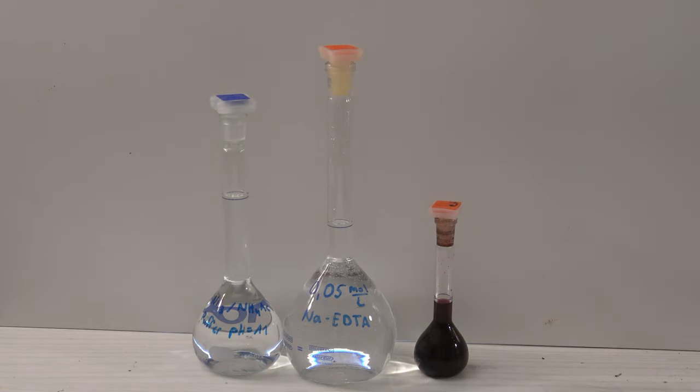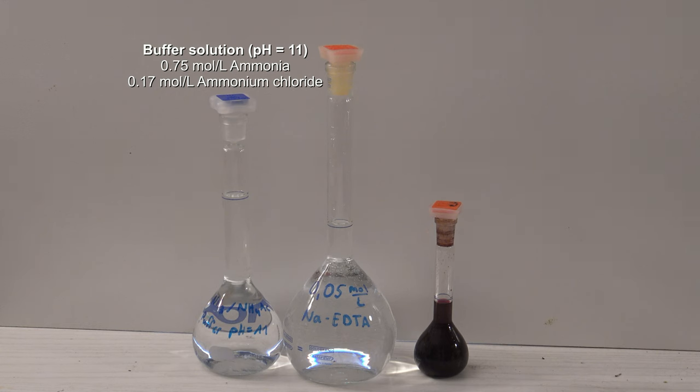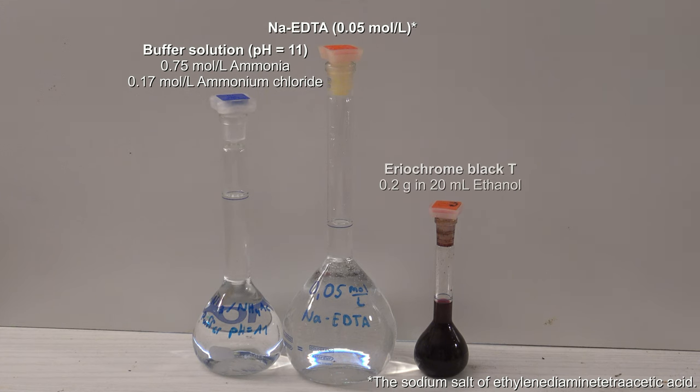Three solutions are needed. A buffer solution with a pH of 11, which is an aqueous solution of ammonia and ammonium chloride. An aqueous solution of sodium EDTA. And a solution of eriochrome black T in ethanol.